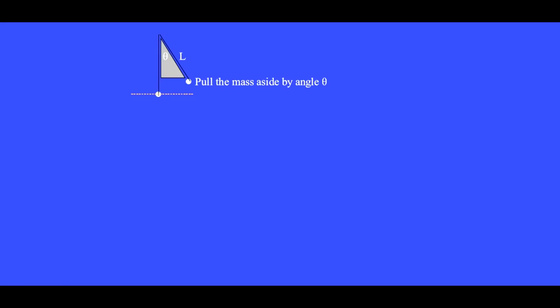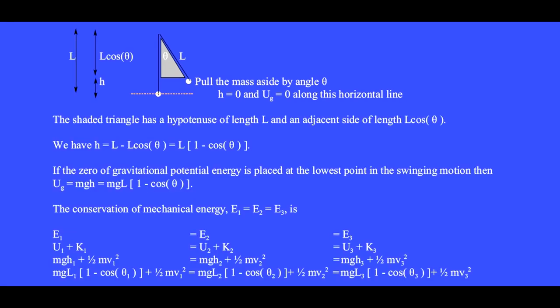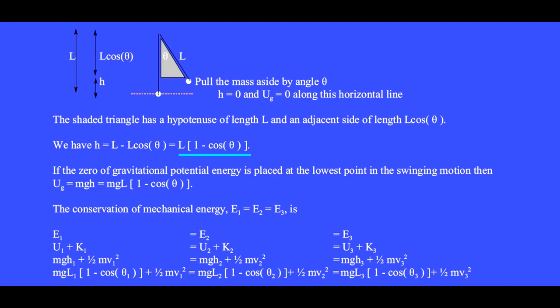A pendulum consists of a mass hanging from a string of length L. Pull the mass aside by angle theta. We set H equals 0 and gravitational potential UG equals 0 along the horizontal line at the lowest point. The shaded triangle has a hypotenuse of length L and an adjacent side of length L cosine theta. So height H equals L minus L cosine theta, which we factor to get H equals L times (1 minus cosine theta).